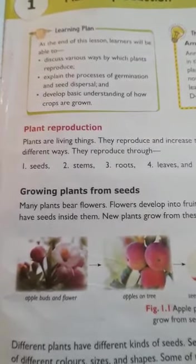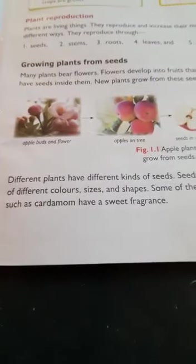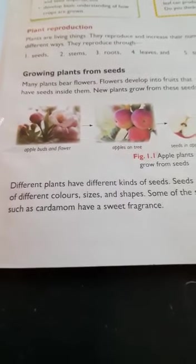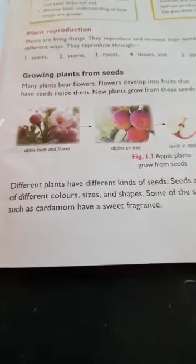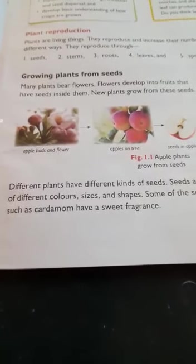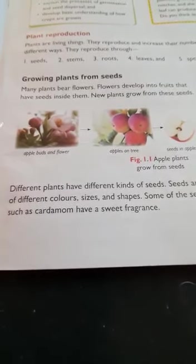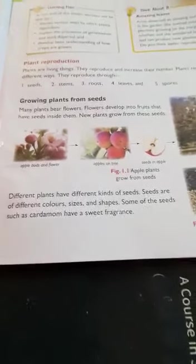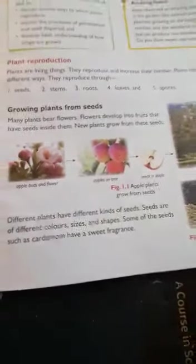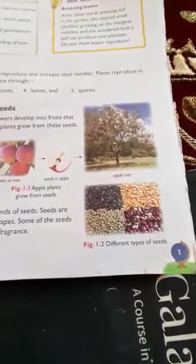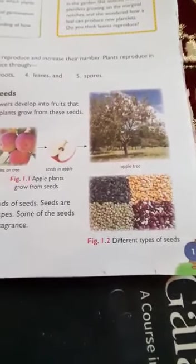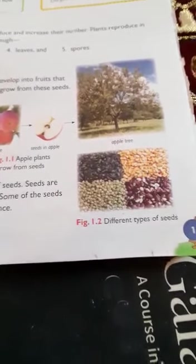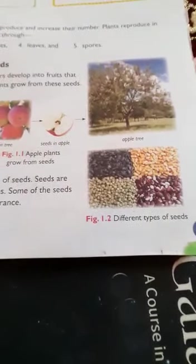The first way is growing plants from seeds. Many plants bear flowers — flowers develop into fruits that have seeds inside them, and new plants grow from these seeds. Different plants have different kinds of seeds in different colors, sizes, and shapes. Some seeds, such as cardamom, have a sweet fragrance which we use in desserts.